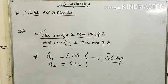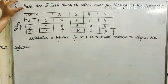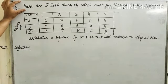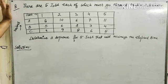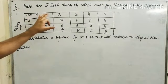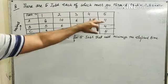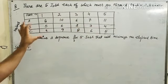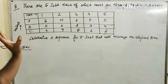For clarification, we are moving on to a problem so you can better understand the method. This is the first question: there are 5 jobs, each of which must go through machines A, B, and C. So jobs are 1, 2, 3, 4, 5, and A, B, C are the machines.